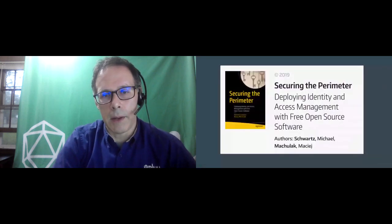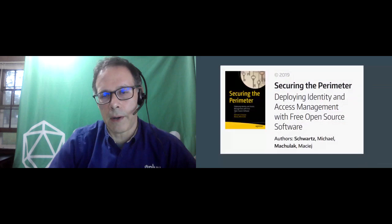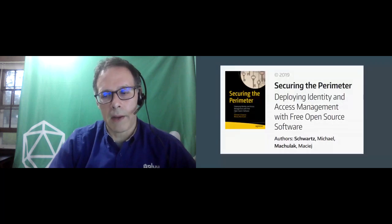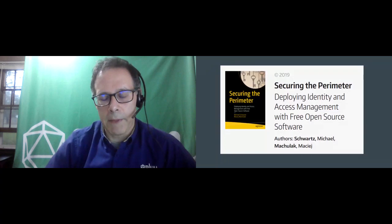I'm also the author of a book called Securing the Perimeter, published by Apress last year, with my co-author Mache Mahulak. It's about how you use open source software for access management, featuring tools, plugins, libraries, and where we need an IDP, the Glue server. It's a good place to start if you want to learn about LDAP, SAML, OAuth, OpenID, proxying, two-factor authentication, or identity management. There are about 10 chapters, each half theory and half examples.